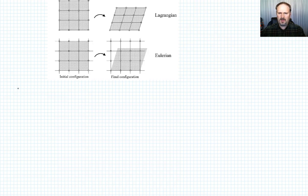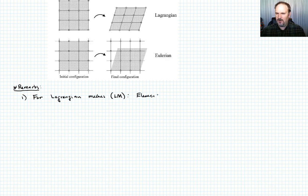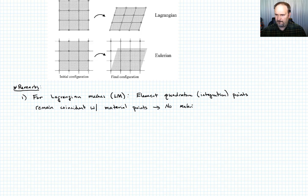Let me give you some remarks on these types of meshes and why there are advantages and disadvantages to each. So let me give you some remarks. Number one. For Lagrangian meshes, I'm going to abbreviate those LM. So for Lagrangian meshes element quadrature or integration points remain coincident with the material points that they were on originally. Because they're tied right to the nodes themselves. What does that mean? No material passes between elements. So whatever material began in an element that's the amount of material that's still in the element.